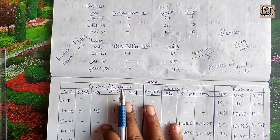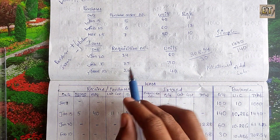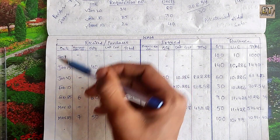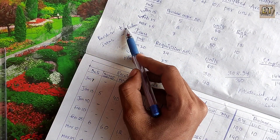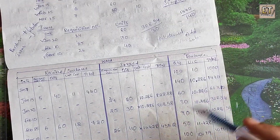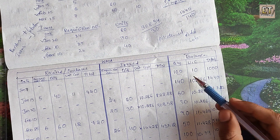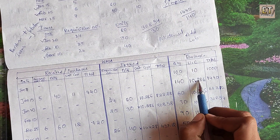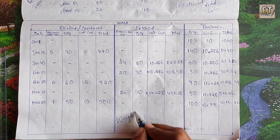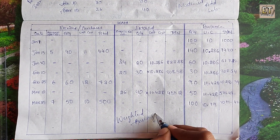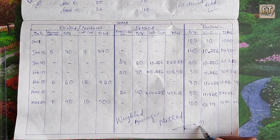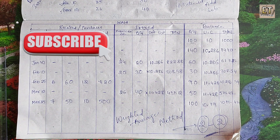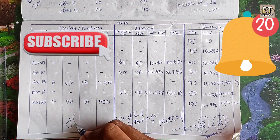This is the answer. Let's review date-wise: purchase order number, requisition number — we can't change the date-wise order. We calculate the unit cost as total divided by quantity and update the balance accordingly. This is the Weighted Average Method from the 2nd unit. We will learn more in future videos. Subscribe to our channel. Thank you.